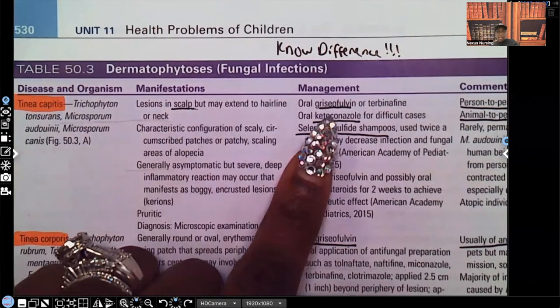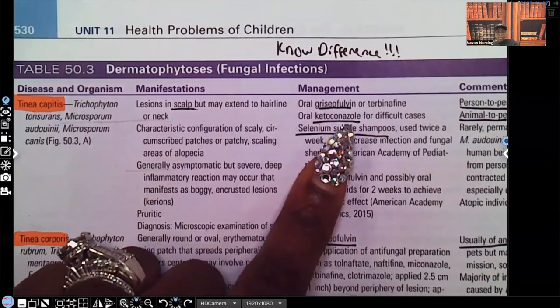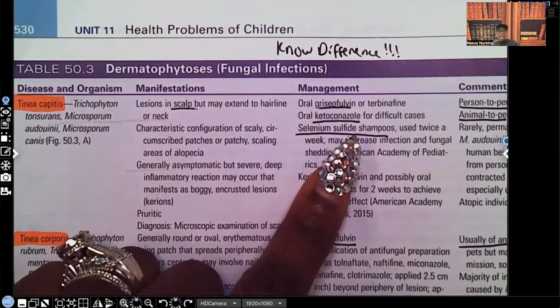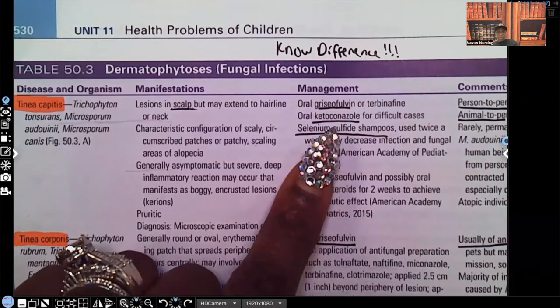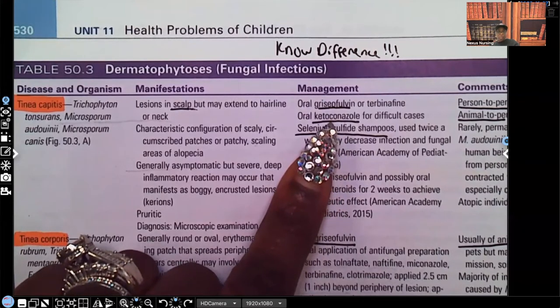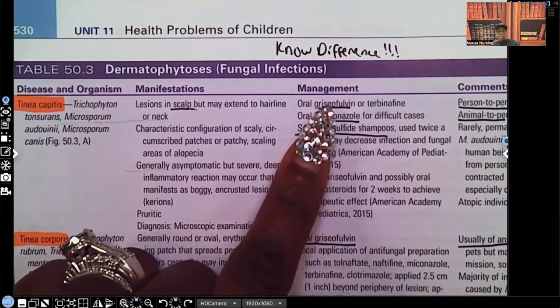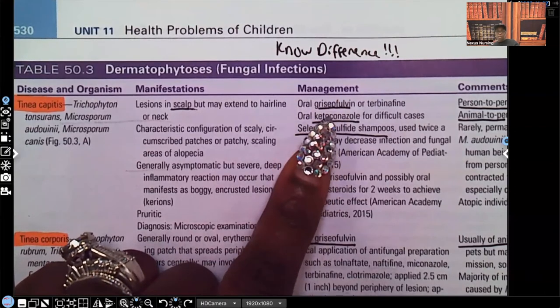Oral management: griseofulvin, ketoconazole, selenium sulfide shampoos. With the selenium sulfide shampoo, the patient's going to use it twice a week. They can use ketoconazole that's orally or griseofulvin. Here's something important for you guys to know about griseofulvin.